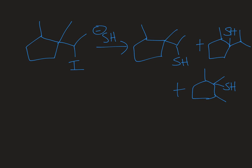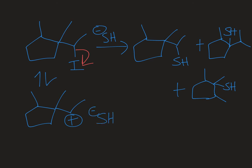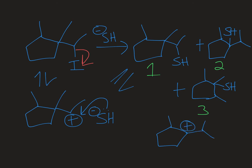Previously we had figured out the carbocation intermediates that yield the products we see. The first step in this SN1 reaction is that the leaving group leaves — iodine is already a good leaving group, so it can go on its own. That generates the original carbocation, and if the SH came in and attacked, that gives us product one. Now, product two must have had a carbocation in a different position, because that's where the nucleophile ended up. So we need to figure out how we got from this original carbocation to the other carbocation that would generate product two.